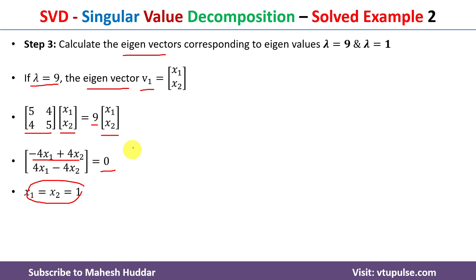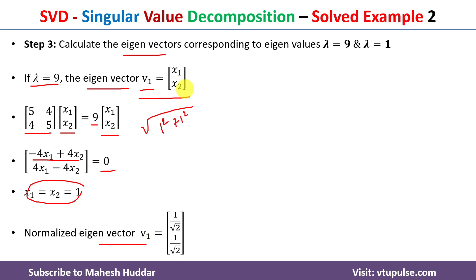We normalize v1 by dividing each element by its length. The length of v1 = [1; 1] is √(1² + 1²) = √2. So the normalized eigenvector v1 = [1/√2; 1/√2].